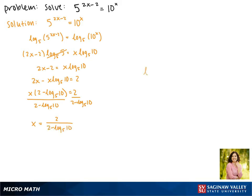Now the log base 5 of 10 can be simplified. Since 10 is the product of 5 and 2, our logarithm rules say that we can break up multiplication by making them into separate logarithms being added together. This gives us the log base 5 of 5 plus the log base 5 of 2. Since the log base 5 of 5 equals 1, this simplifies to 1 plus the log base 5 of 2.